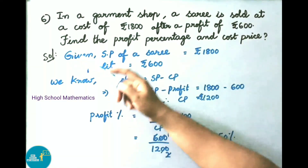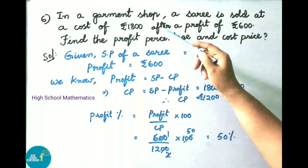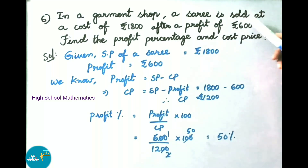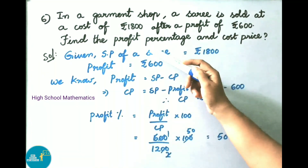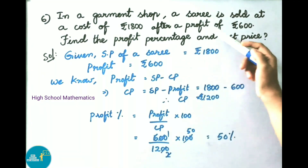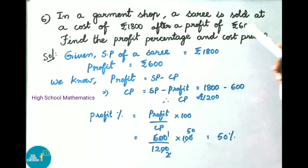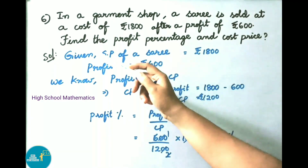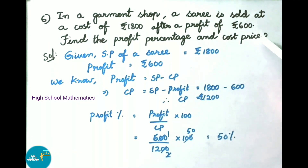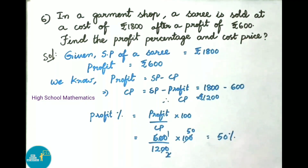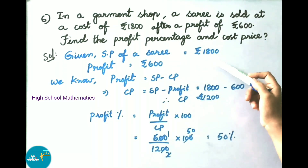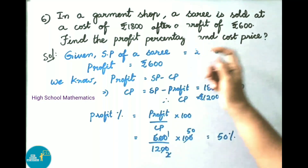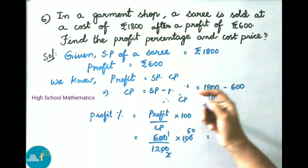Question number 6: In a garment shop, a sari is sold at a cost of 1800 rupees after a profit of 600 rupees. Find the profit percentage and cost price. Solution: given selling price of sari is 1800 rupees and profit is 600 rupees.